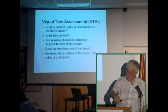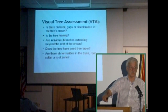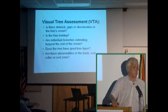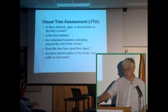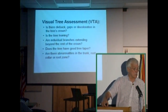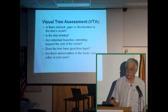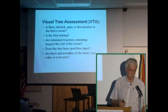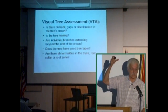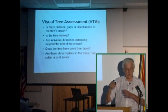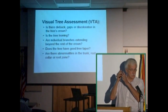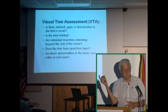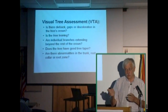Look for dieback in the crown, gaps, discoloration in the foliage, whether the tree is leaning, and whether individual branches extend beyond the others in the crown. Also check trunk taper — does the trunk diameter decrease as you go higher? Some landscape trees have terrible trunk taper, where the diameter up high is nearly the same as at the base. Trees with good trunk taper have a greater tendency to bend in the wind.